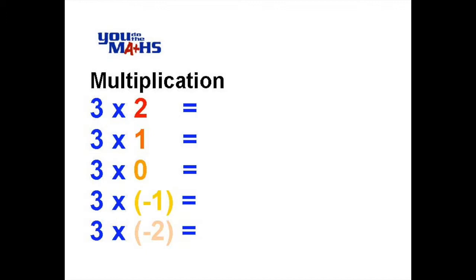If we start looking at this table, we know that 3 multiplied by 2 is 6. We also know that 3 multiplied by 1 is 3 and 3 multiplied by 0 is 0.